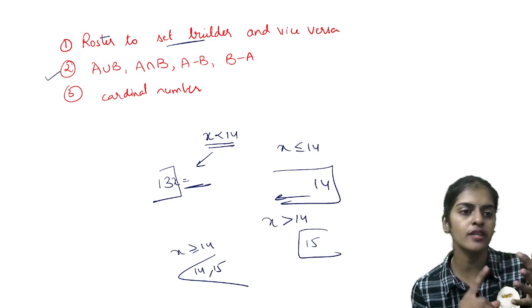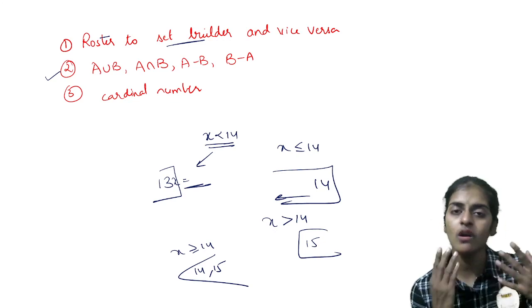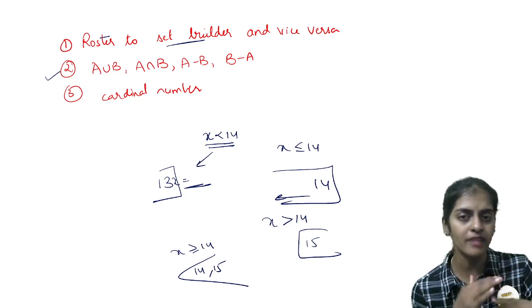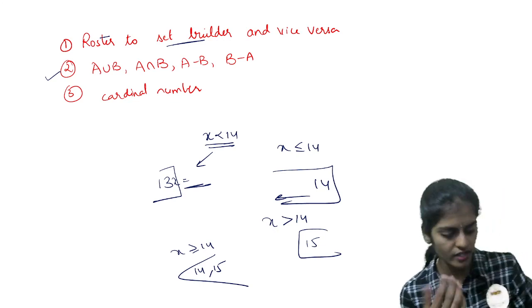After writing roster form, you will find what is A union B, A intersection B, A minus B, B minus A. So one set question, they are asking you to find all these four operations. So simple.